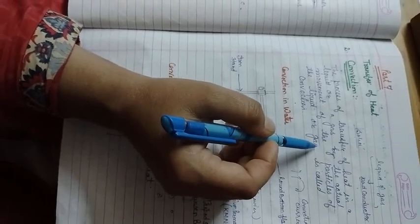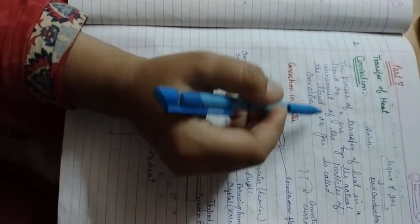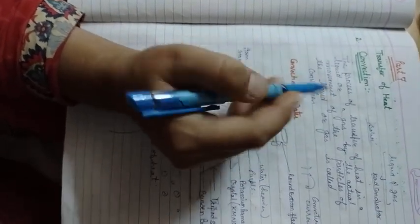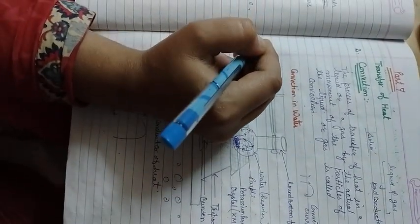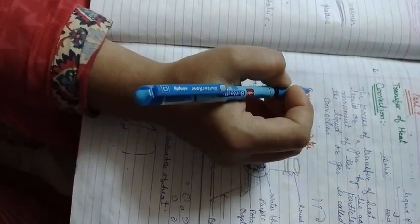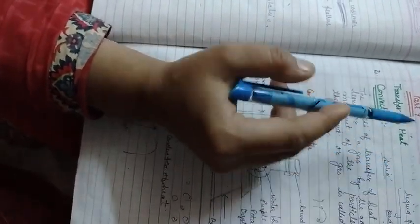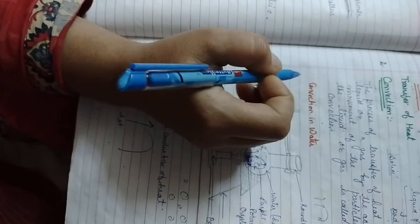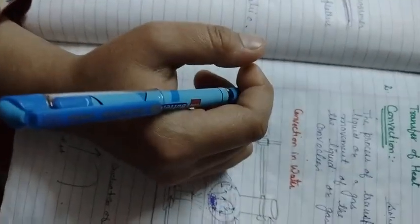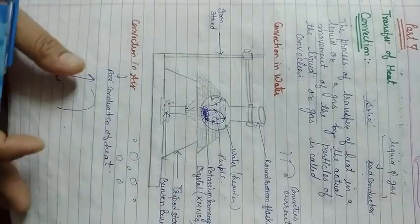A question arises: why is heat transferred in liquids and gases by convection? The reason is that the molecules of liquids and gases are quite free to move — they are freely movable. The molecules of solids are closely packed and their movement is not possible, so convection does not take place in solids.